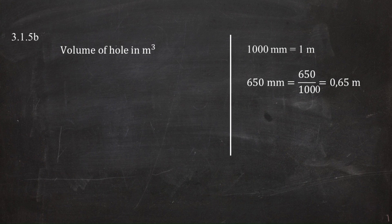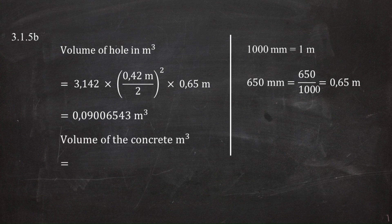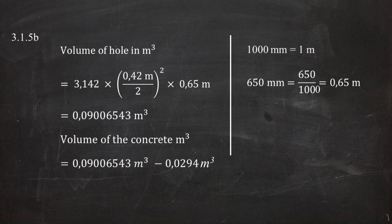The volume of the hole equals π × (0.42/2)² × 0.65 = 3.142 × (0.21)² × 0.65 = 0.09006543 cubic meters. The volume of concrete needed equals the hole volume minus the pole volume: 0.09006543 − 0.0294 = 0.06066543 cubic meters per hole.